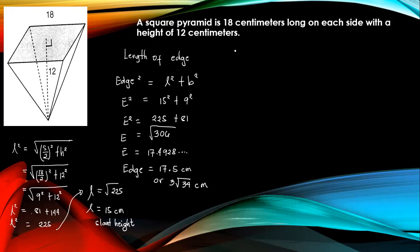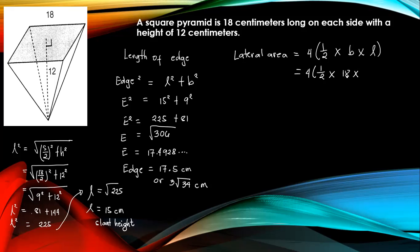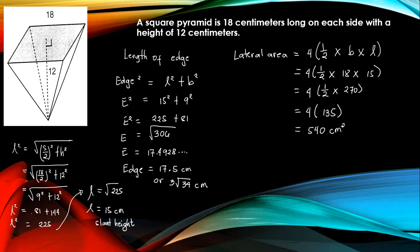Now for the lateral area. Lateral area equals 4 times one-half times the base times the slant height: 4 times one-half times 18 times 15. 18 times 15 is 270, divided by 2 is 135. Then 135 times 4 equals 540 centimeters squared. This is our lateral area.